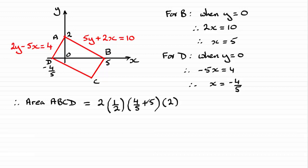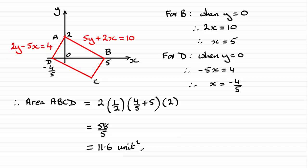The twos cancel out, so it's just a question of doubling 4 fifths plus 5. That's a total of 29 fifths, times 2 gives 58 fifths. You could leave it like that, or write it as a decimal: 11.6. I prefer to write units squared at the end since it is an area — you won't lose marks if you don't, but it's my preference. Hope you were able to get that!